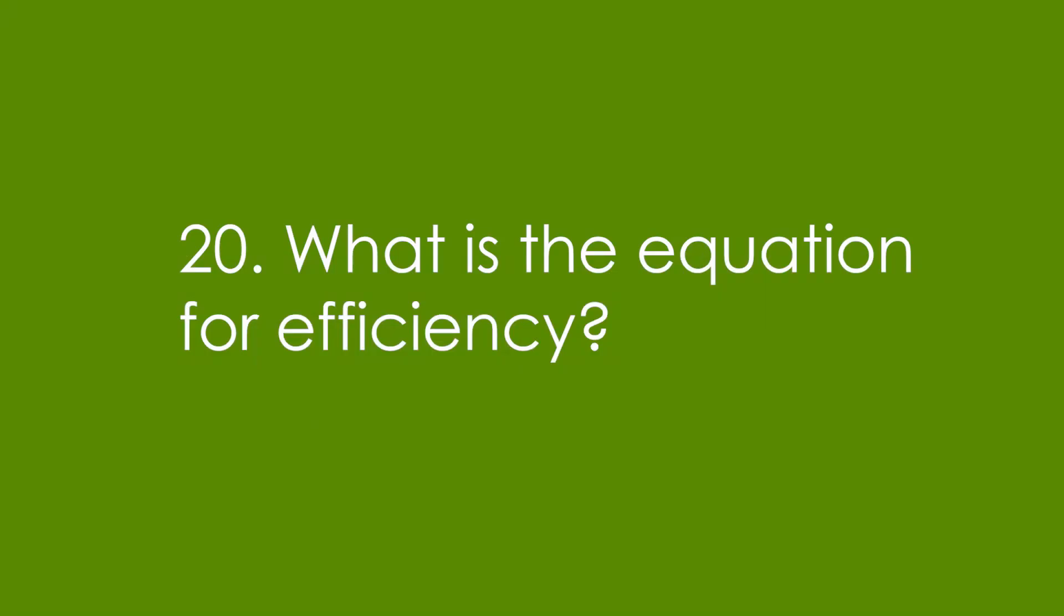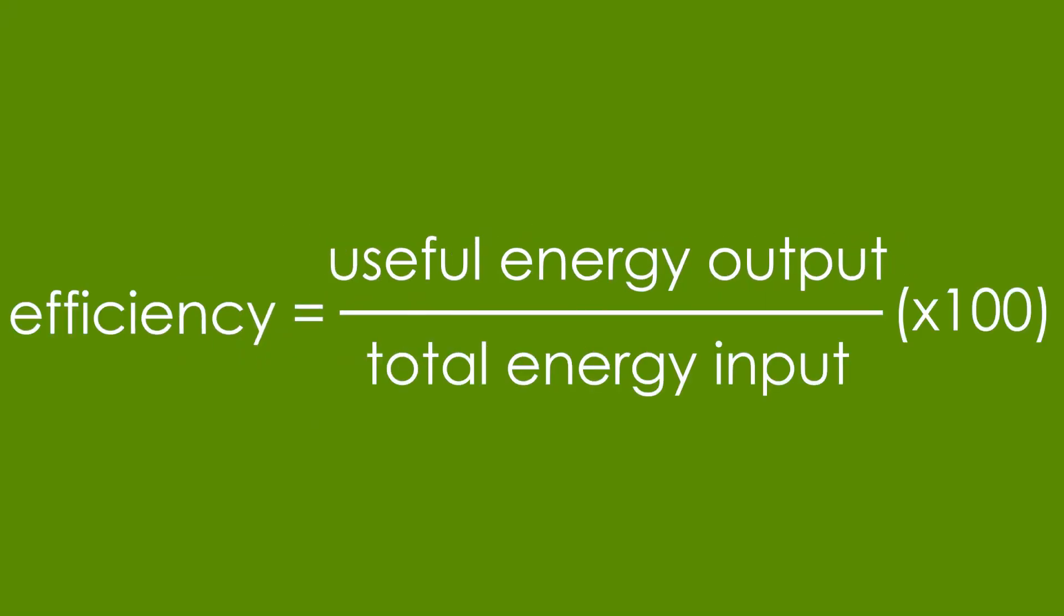20. What is the equation for efficiency? It's useful energy output divided by total energy input. That gives you a decimal, and to turn it into a percentage, all you do is times by 100.